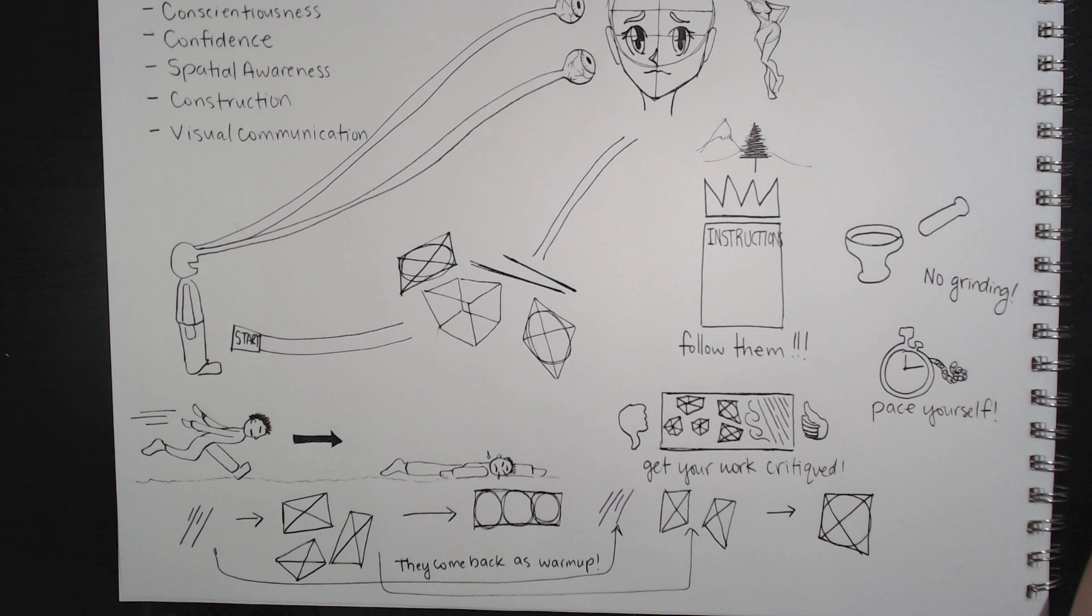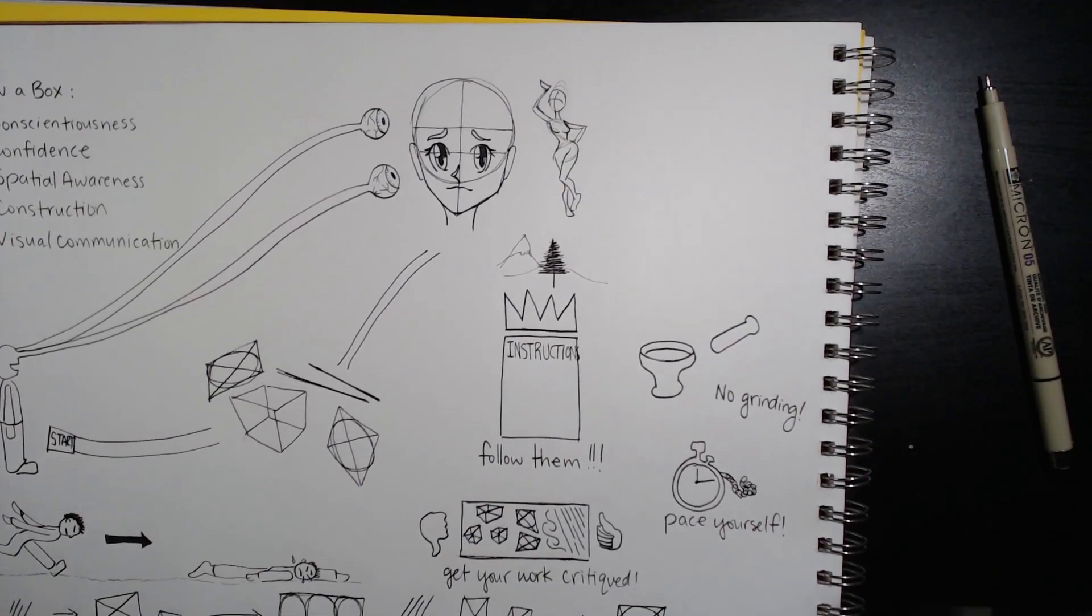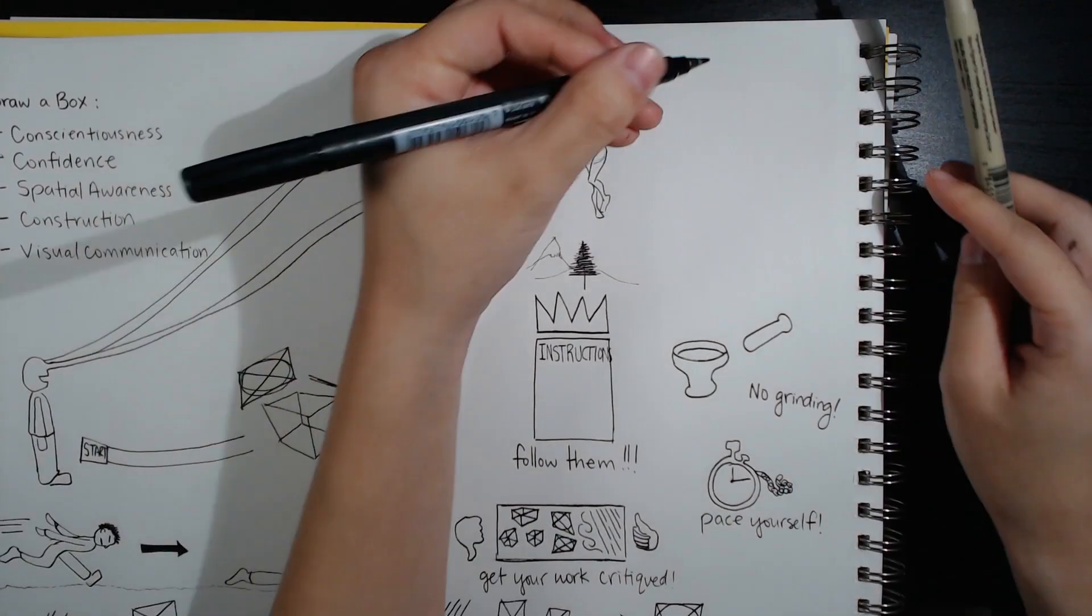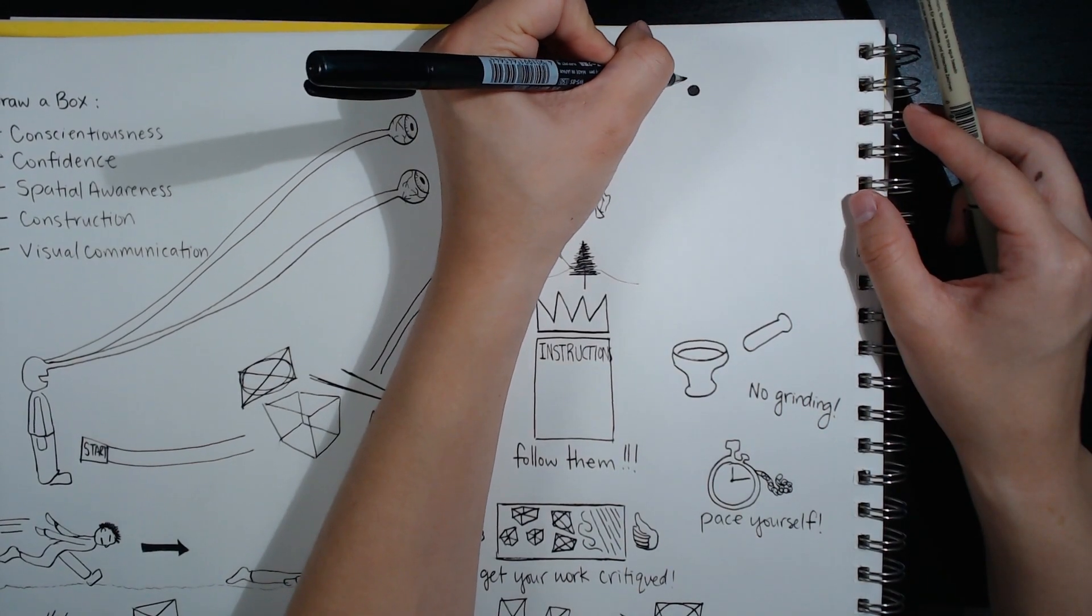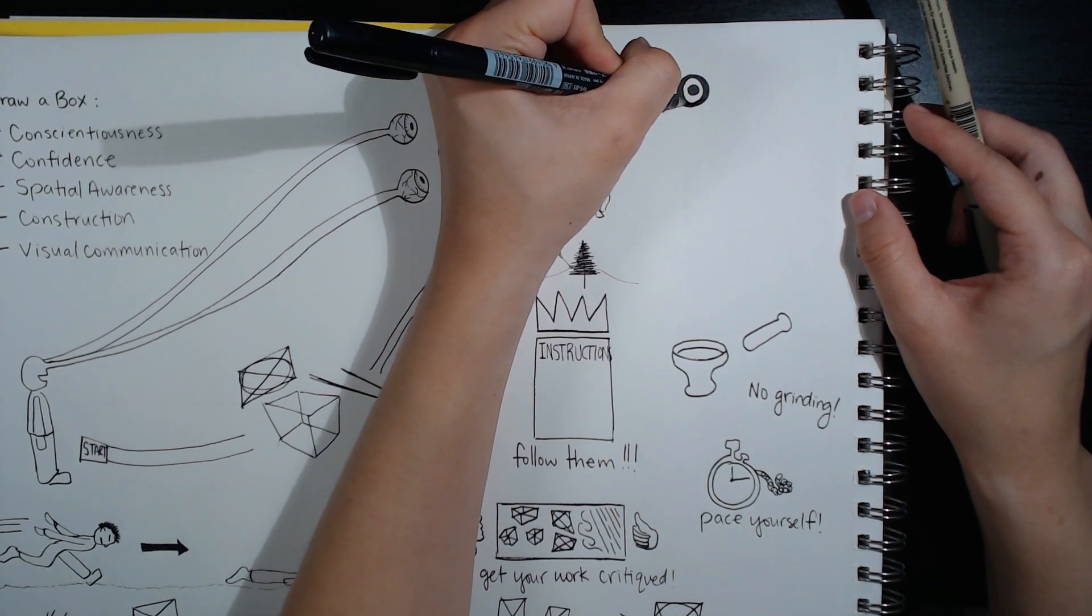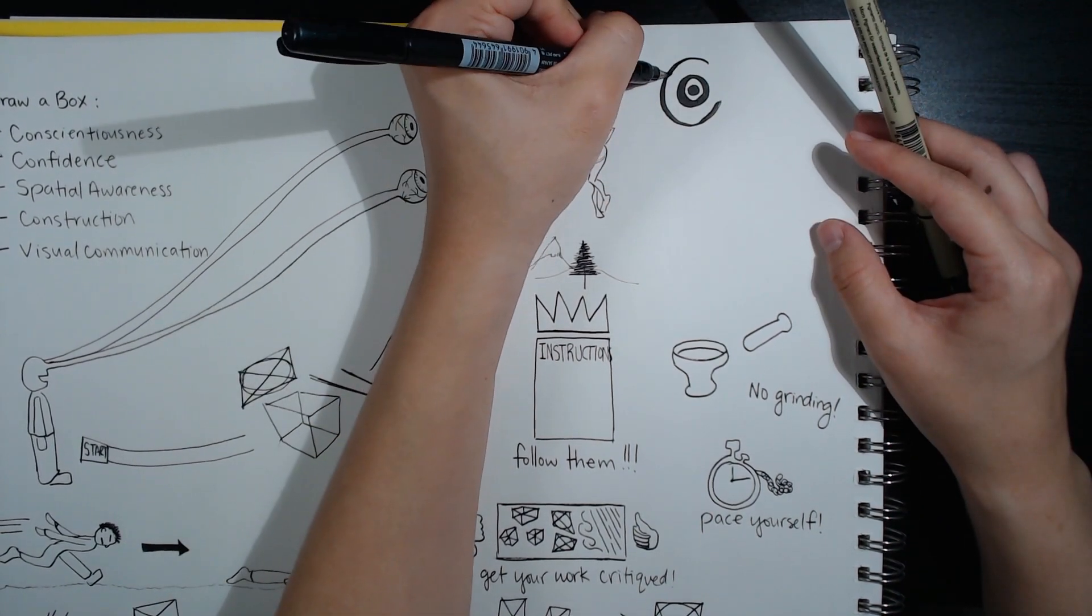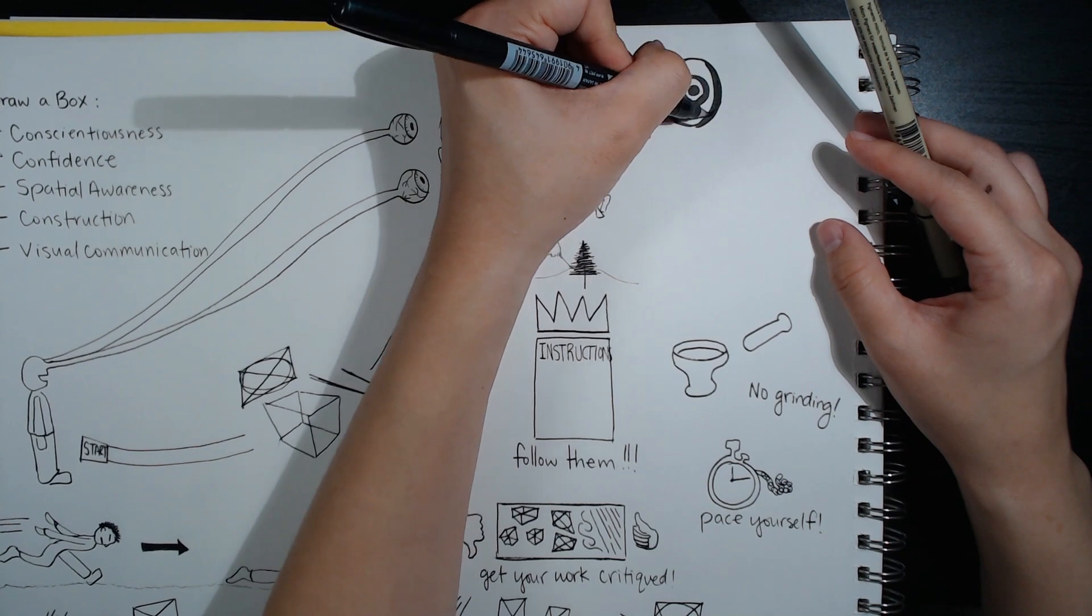Once you've completed a lesson and moved on, you will still be expected to incorporate those lessons into a regular warm-up routine. Pick two or three exercises at the beginning of each sitting from all the exercises you've learned thus far and do them for 10 to 15 minutes. That'll allow you to continue honing those specific skills without impeding your ability to move forward.